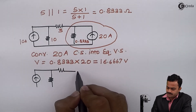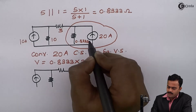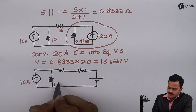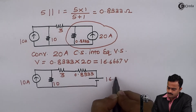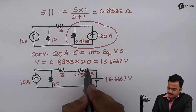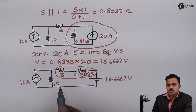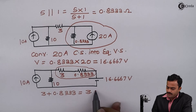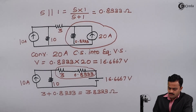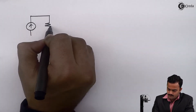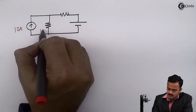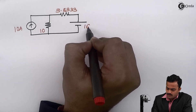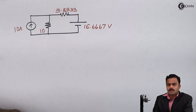The 0.8333 ohm will come in series and gets converted into a voltage source of 16.6667 volt. The rest of the circuit remains as is. A slight modification occurs: 3 ohm and 0.8333 ohm come in series, giving a resultant resistor of 3.8333 ohm. Let us redraw the circuit.